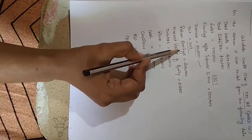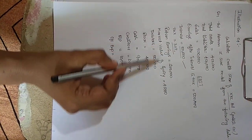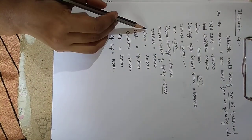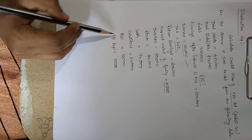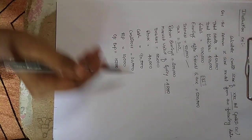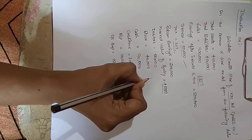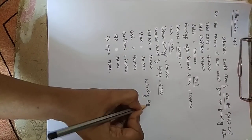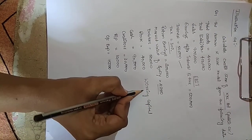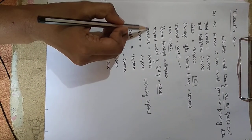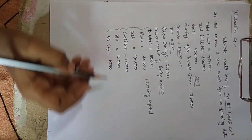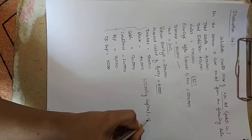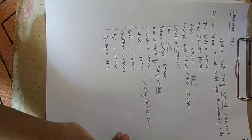They have also directly given retained earnings and market value of equity. Additionally, certain current assets and current liabilities are provided. Since working capital is not directly given in this question, we need to calculate it using the formula: working capital equals current assets minus current liabilities.